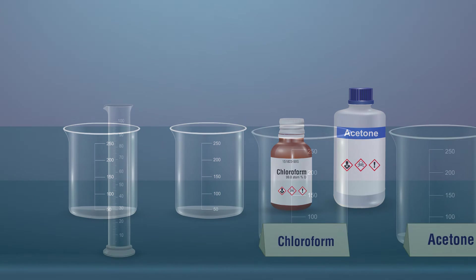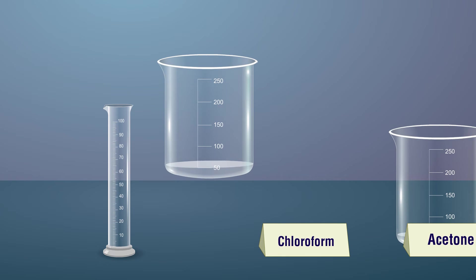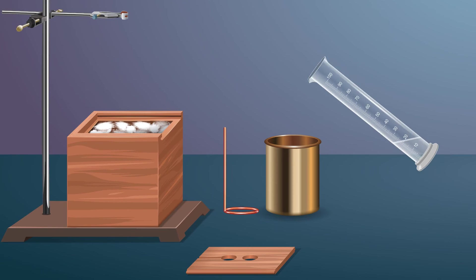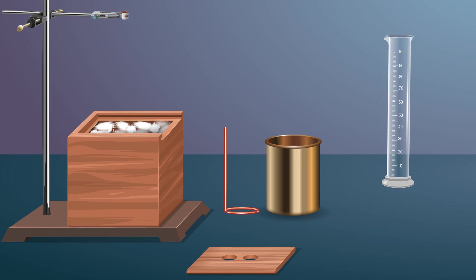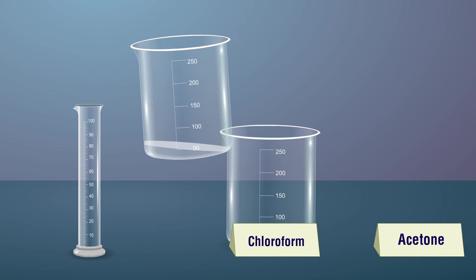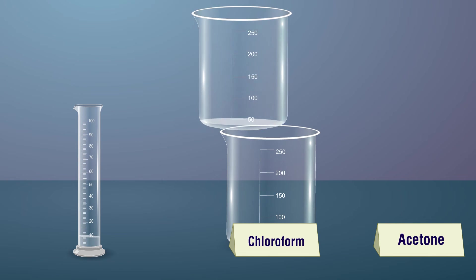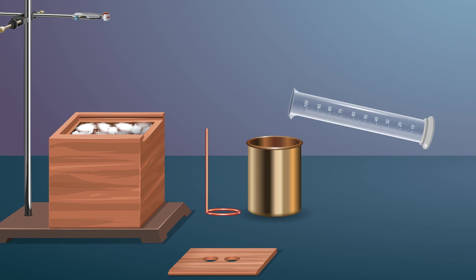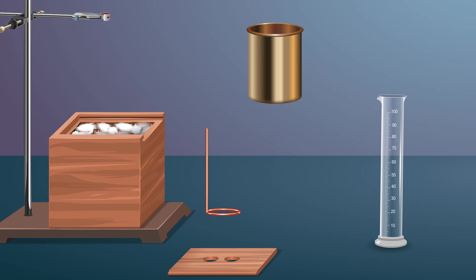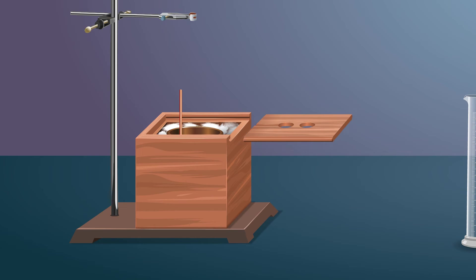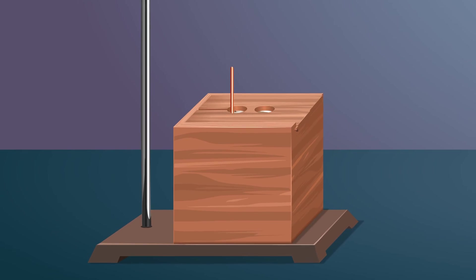Transfer the chloroform volume equivalent to 0.1 mole (approximately 8.1 milliliters) to the insulated boiling tube after measuring from a measuring cylinder. Transfer the volume of acetone equivalent to 0.1 mole of acetone (approximately 7.3 ml) in a clean measuring cylinder. Pour the acetone from the measuring cylinder into the chloroform contained in the insulated boiling tube.